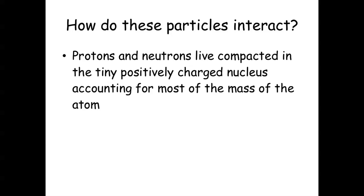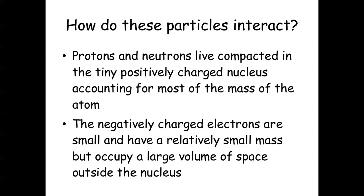So how do they interact? Protons and neutrons live compacted in the tiny positively charged nucleus, accounting for most of the mass of the atom. The negatively charged electrons are small and have a relatively small mass, but occupy a large volume of space outside the nucleus because they're moving around so much. We mentioned the Heisenberg Uncertainty Principle — you can never be exactly sure where a specific electron is because they move so fast. It's almost like they're everywhere, but they're not — you just don't know where they are.